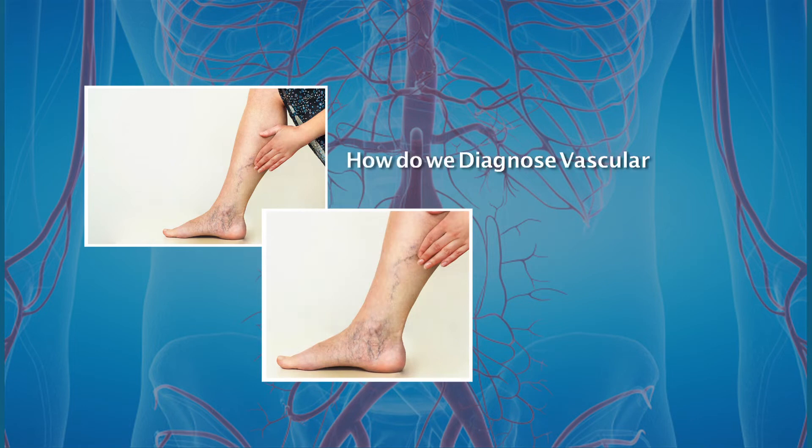How do we diagnose vascular diseases? An examination by the vascular specialist will clinch the diagnosis. To treat these vascular diseases we need to have further imaging modalities. Common modalities used are arterial and venous Doppler, peripheral angiograms, CT angiograms, and MR angiograms of the limbs.